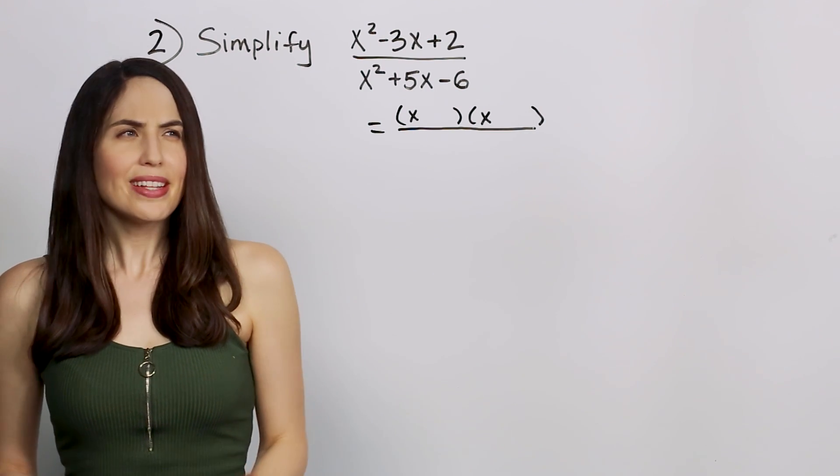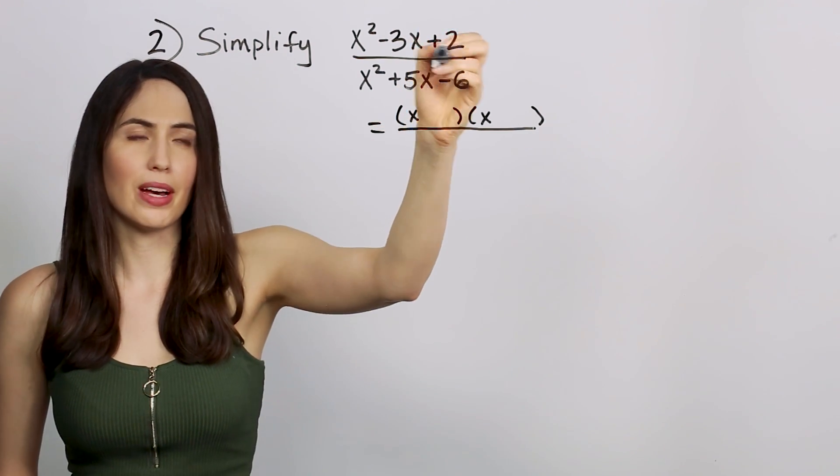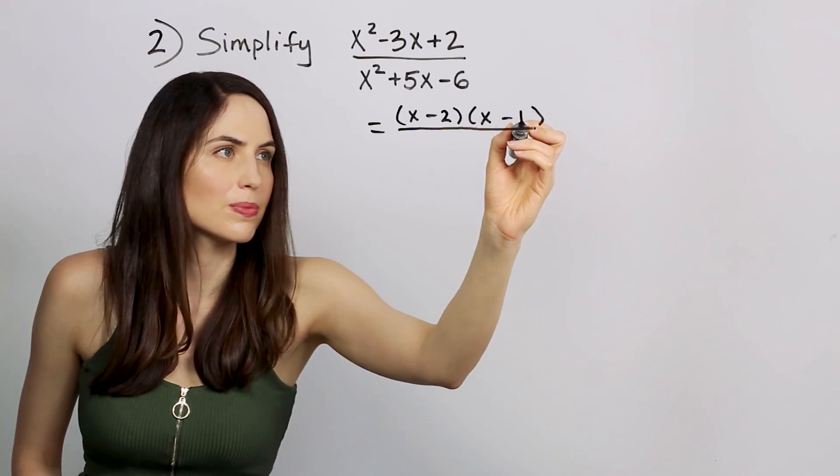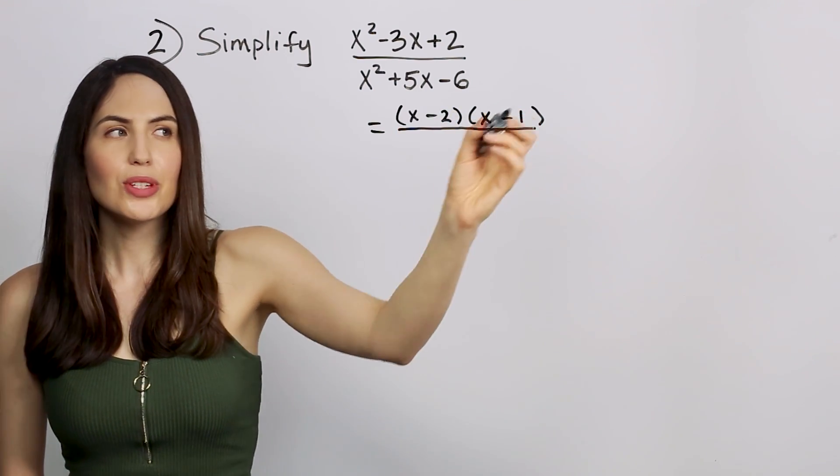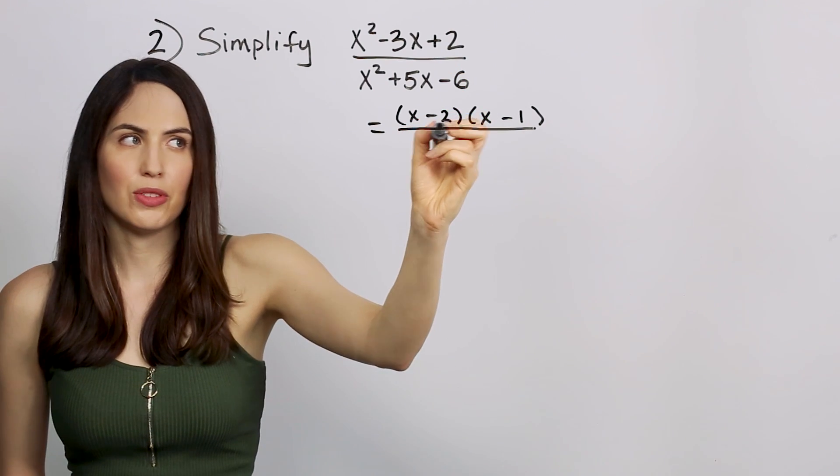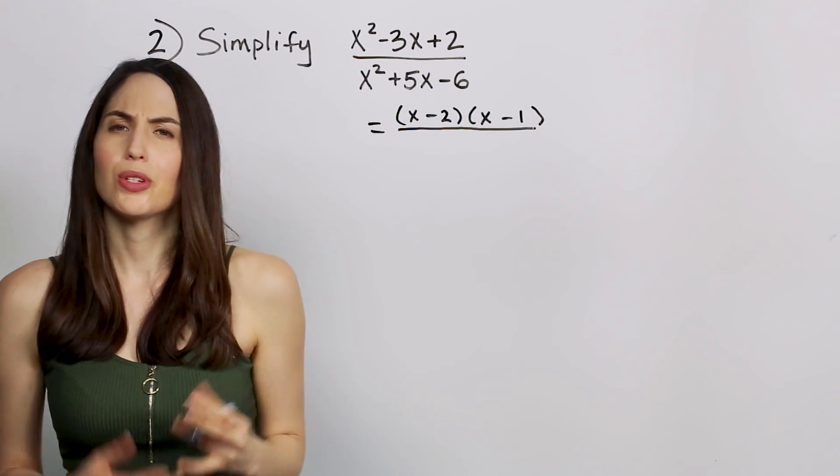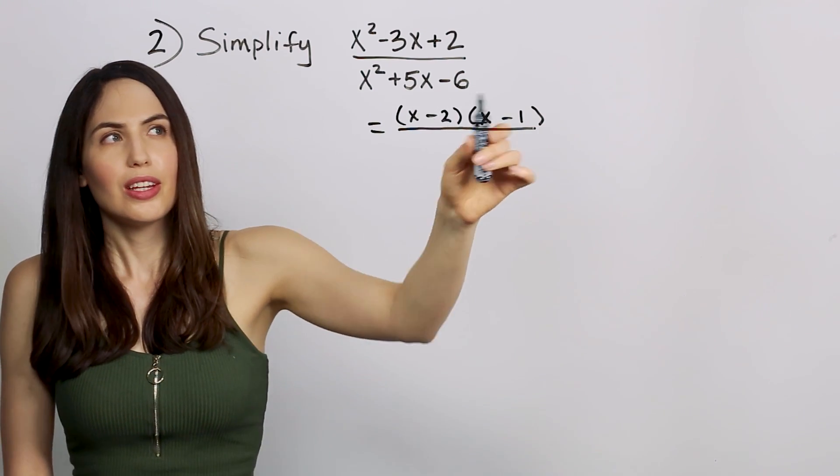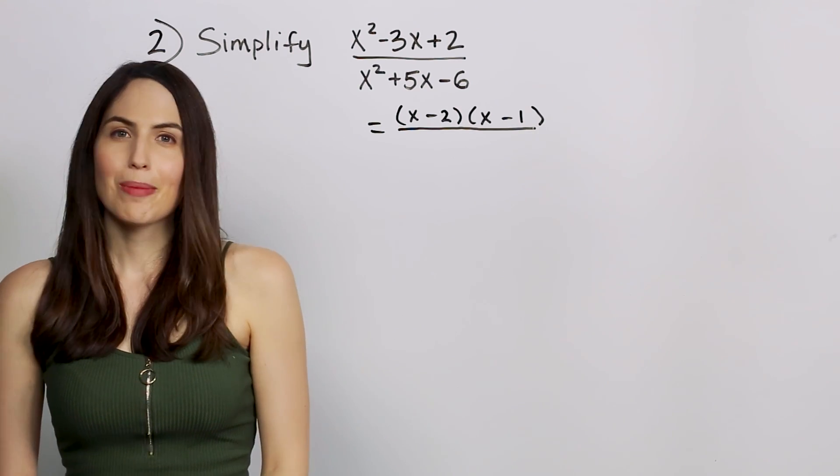But basically, we want to find two numbers that multiply to positive 2 and add to negative 3. So let's try negative 2 and negative 1. Negative 2 and negative 1 multiply to give you positive 2, which is what we wanted. And negative 2 and negative 1 add to give you negative 3 here, which is also what we wanted. And if you check this by multiplying it out, you will get this expression, so it will work. Let's do the same thing for the bottom.